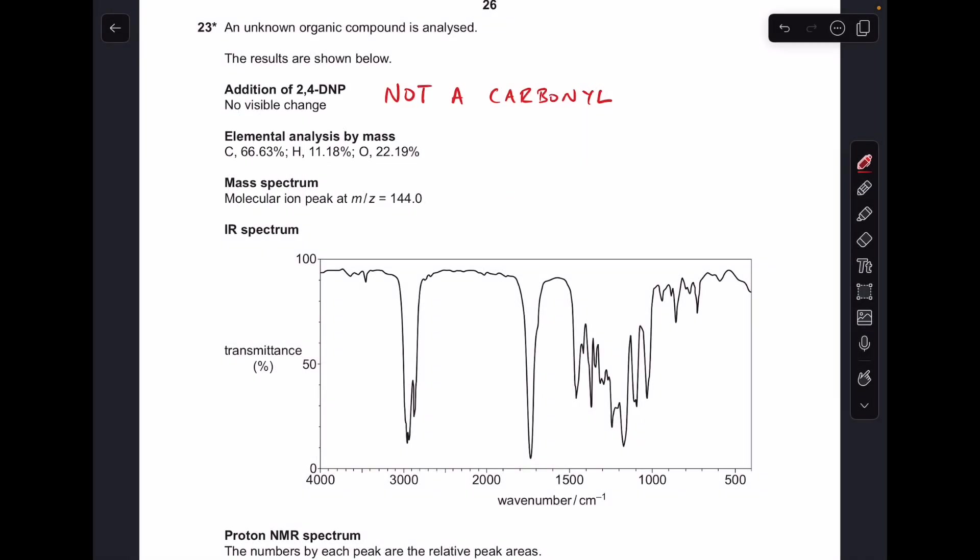Okay, so let's make a start. You can see I've written up straight away next to the addition of 2,4-DNP, no visible change. That's telling us that this is not a carbonyl, so it can't be an aldehyde or a ketone.